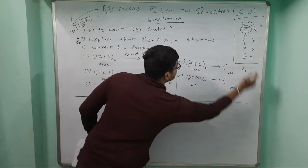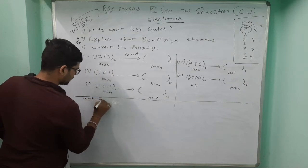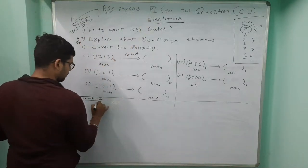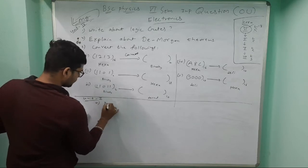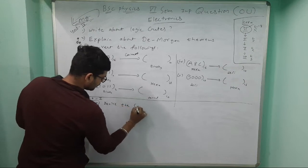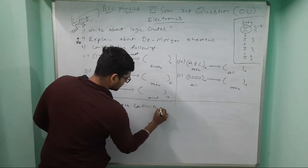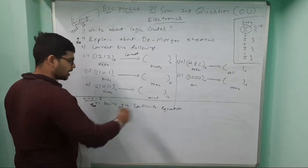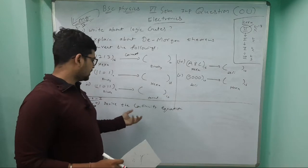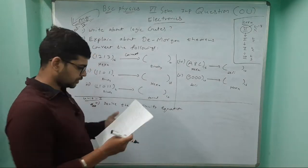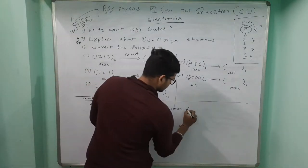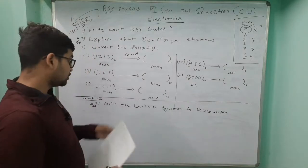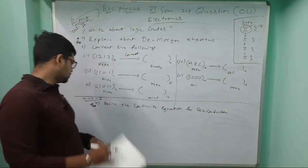Unit 1 long answer questions: First, derive the continuity equation. Very important - you have to practice, then only you can understand. This is for semiconductors. This question has already been asked three times, so continuity equation is very important.